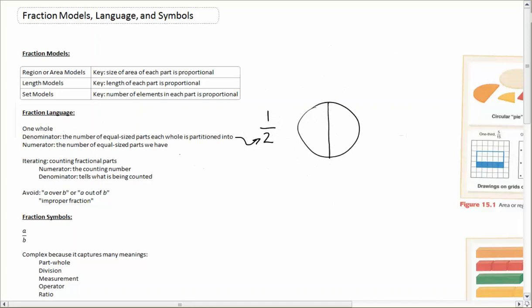The numerator is the one on top, of course, and that's the number of equal sized parts that we have or we're paying attention to. So one half means one of those two equal sized parts, and that's why one half is what it is.